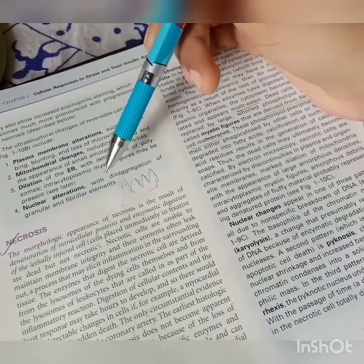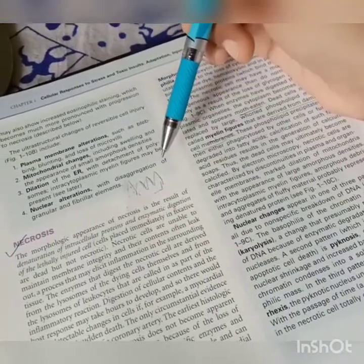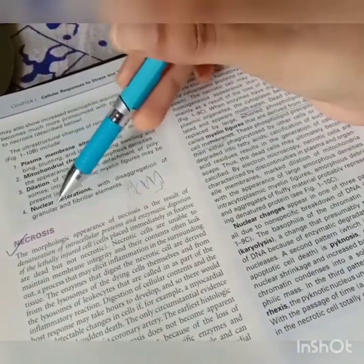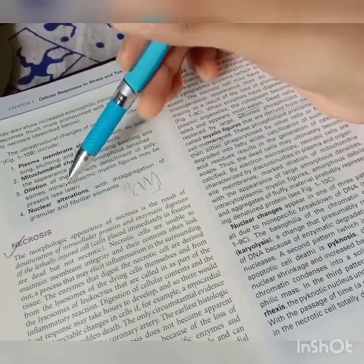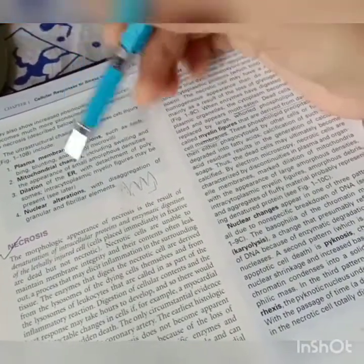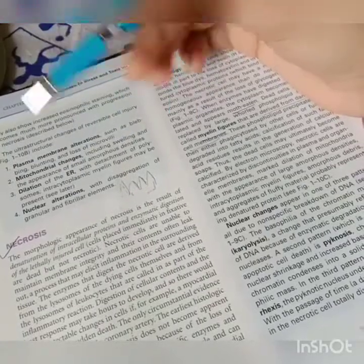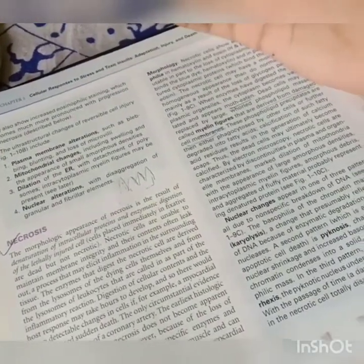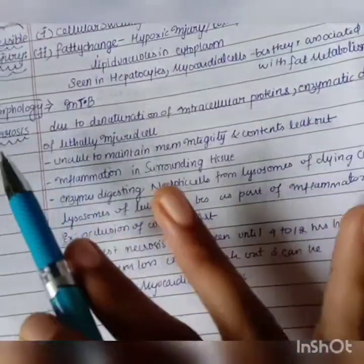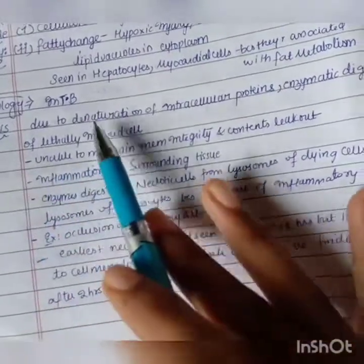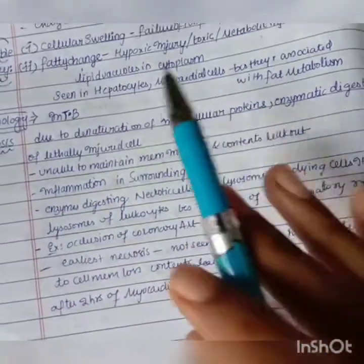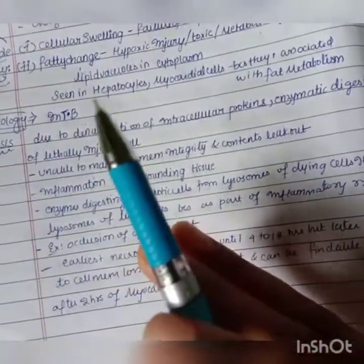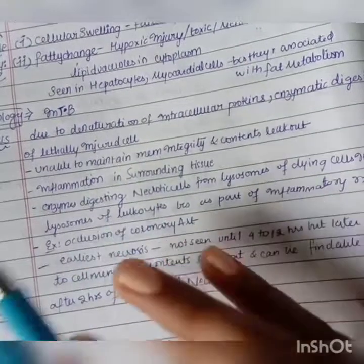Additional ultrastructural changes include dilation of the endoplasmic reticulum with detachment of polysomes, intracytoplasmic myelin figures, and nuclear alterations with disaggregation of granular and fibrillar elements, leading to loss of granular and fibrillar components from the nucleus.